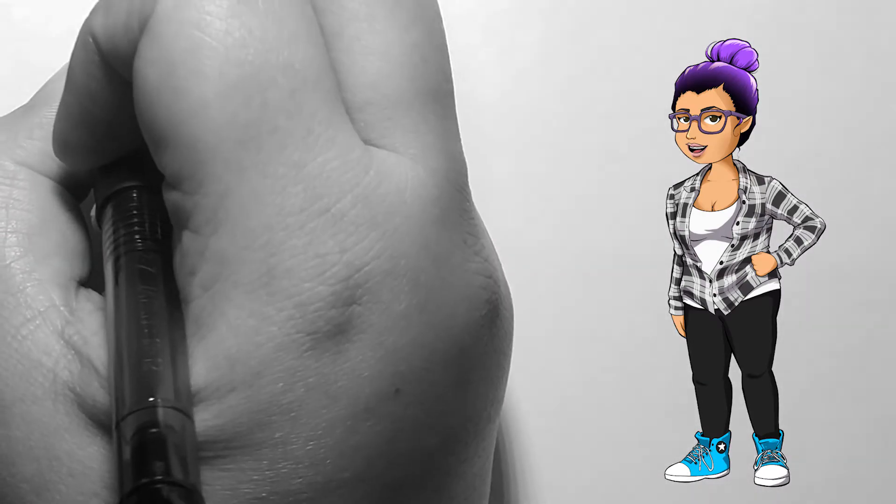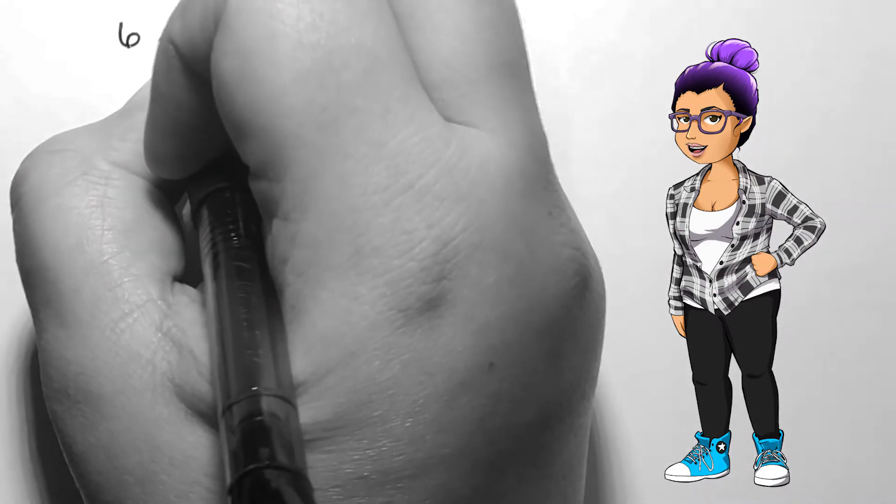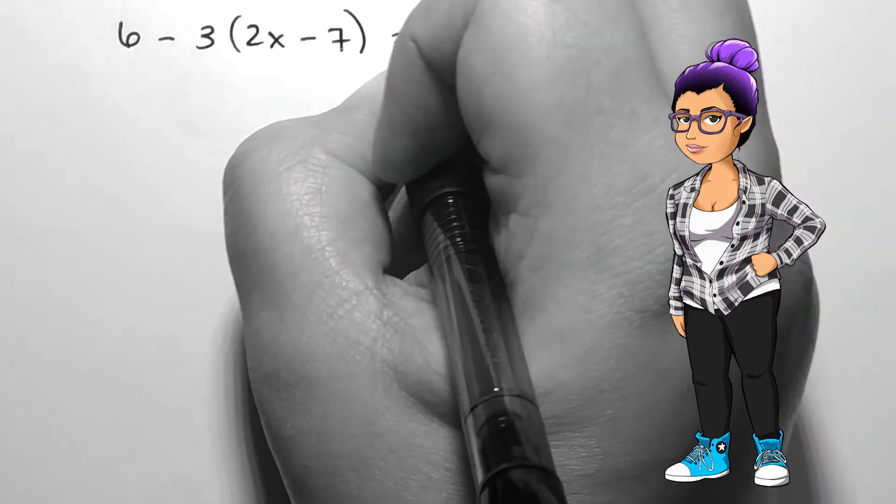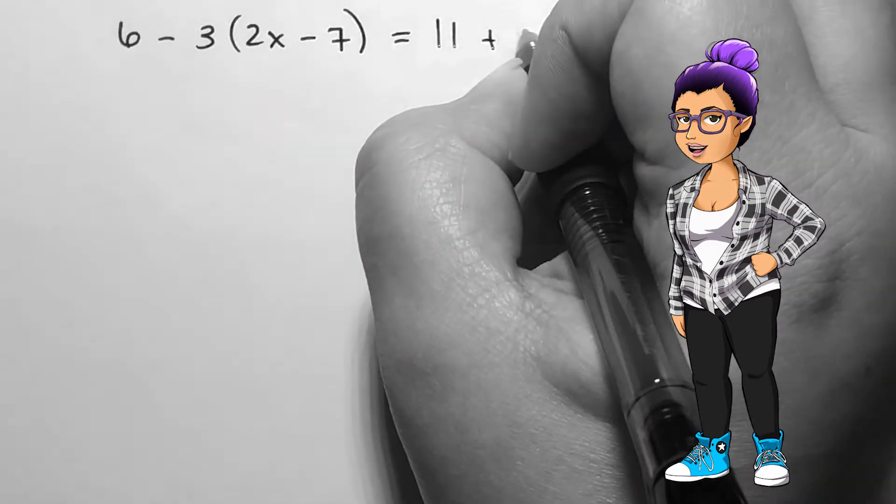Given 6 minus 3 times 2x minus 7 equals 11 plus 4 times 9 minus 3x, we should distribute and combine like terms first.